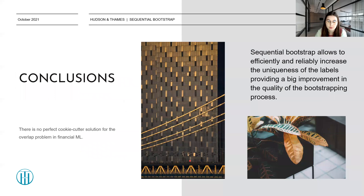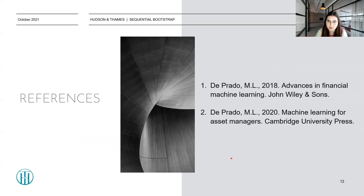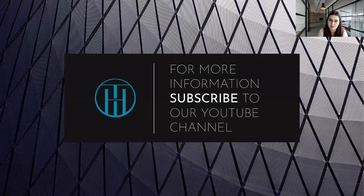In conclusion, there is no perfect cookie-cutter solution for the overlap problem in financial machine learning. However, sequential bootstrap allows us to efficiently and reliably increase the uniqueness of the labels, providing a big improvement in the quality of the bootstrap process. We highly encourage you to test it yourself and share your results with us. For more information, we advise you to dig deeper into the books of Professor Di Prado — Advances in Financial Machine Learning and Machine Learning for Asset Managers. Thank you for your attention, please subscribe to our YouTube channel. It was great to see you today. Bye-bye.